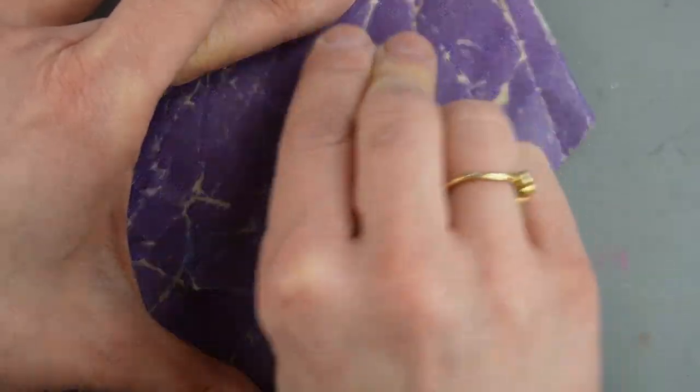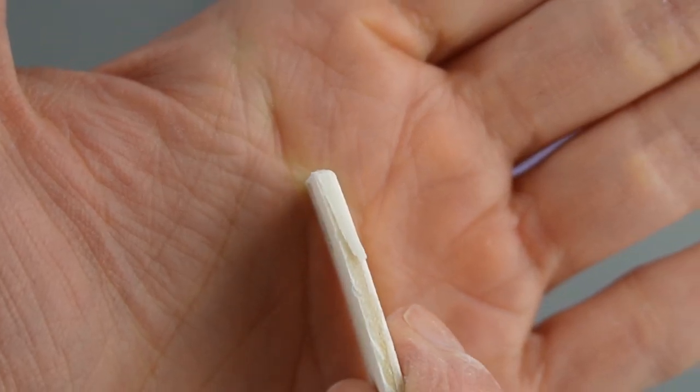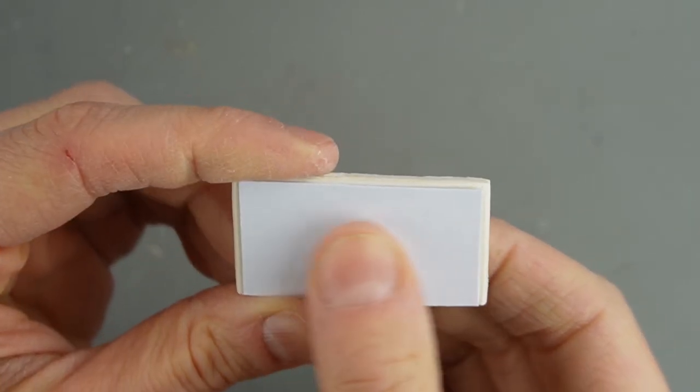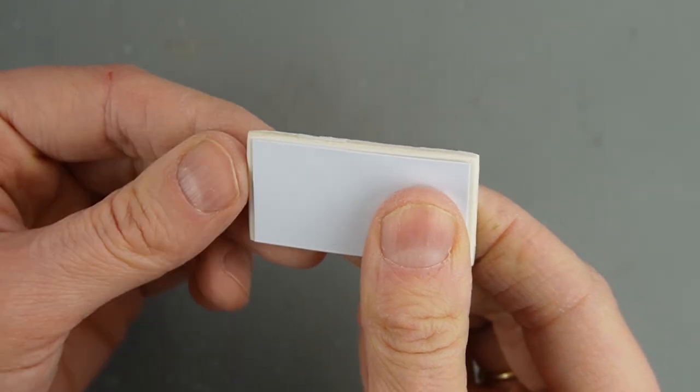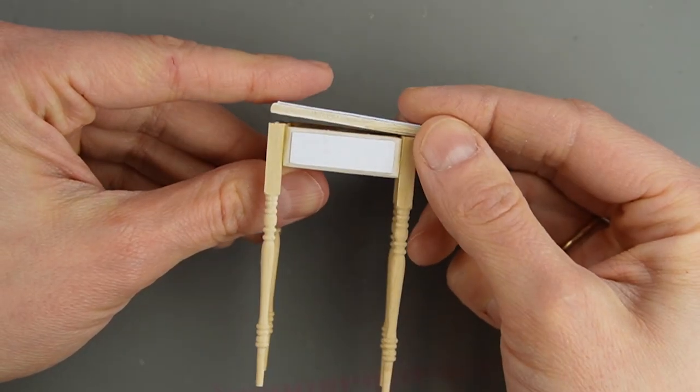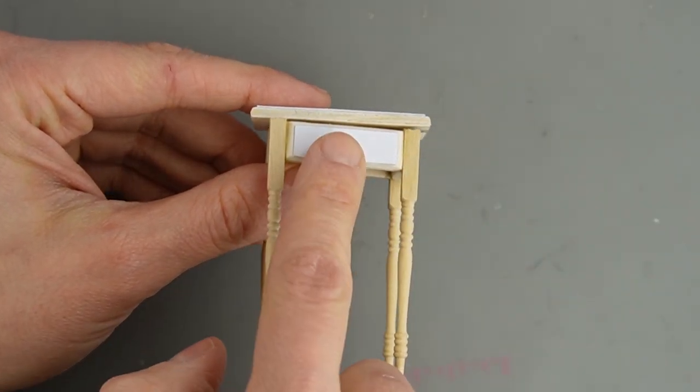Just like I did with the drawer front, I'm rounding the edges and adding cardstock to the top for more detail. Before the glue dries, I adjust the cardstock. You can see how the drawer looks more realistic because I left a gap.